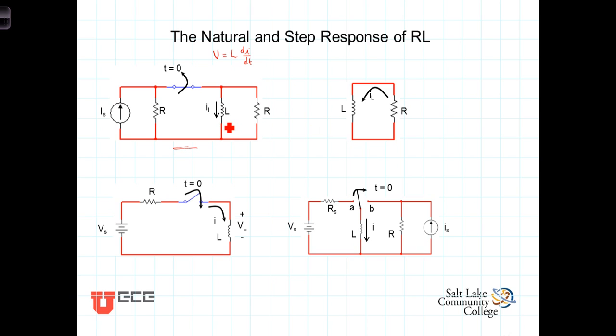Whereas before the switch is opened, the voltage across the inductor was zero, it was a short circuit. Immediately after the switching, the voltage across the inductor is no longer zero. In fact, the voltage across that inductor, in this case, would be the voltage across the resistor, which would be the initial current times the resistance.